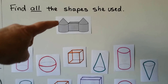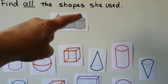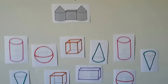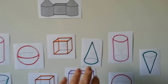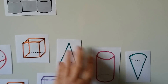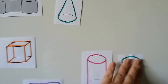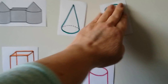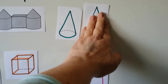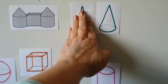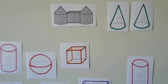I see a cone here and a cone here — that's one, two cones. So we know we need two cones. This cone can be turned this way, so we need those two. Do you see any other shapes?